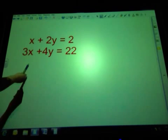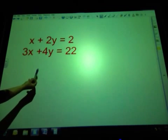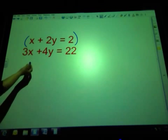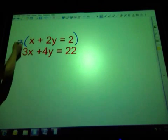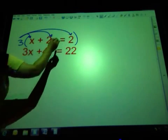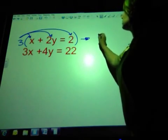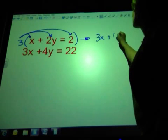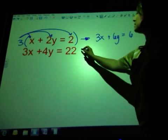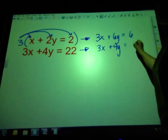However, I need to get either my x's to be the same number or my y's to be the same number. So what I'm going to do is multiply the whole entire top equation by 3 so my x's line up. So remember that we do 3 times x, 3 times 2y, and then 3 times the 2 that's down here. 3 times x is just 3x, 3 times 2y is 6y, 3 times 2 is 6.